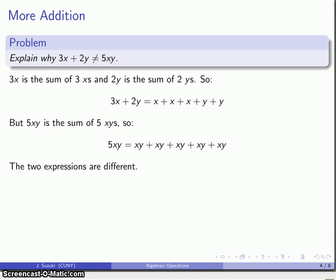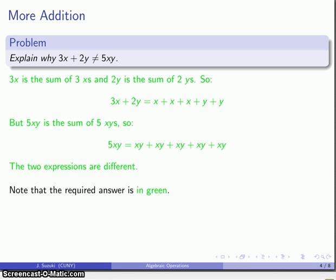And because they are not identical, then you cannot write them as equal to each other. So here's an explanation of why 3x plus 2y is not the same as this. These two expressions are entirely different. We cannot write the equals, and what we want to write down is the section that's in green.